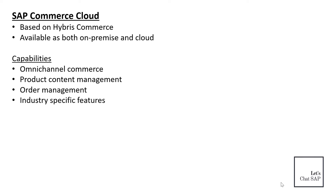SAP Commerce Cloud also provides industry-specific features, also called accelerators — sets of business processes specifically designed for particular industries. Examples include the Financial Service Accelerator, Travel Related Accelerator, Citizen Engagement Accelerator, and Telecom and Media Accelerator. Additionally, Commerce Cloud provides website editing tools based on drag-and-drop functionalities, so users can easily change the look and feel of a website without requiring extensive web development knowledge.